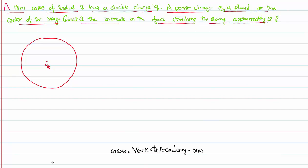First of all, at the center of the ring, there is a charge Q0. Throughout the ring, the total charge on the circle is Q. Between these two charges, there will be a repulsion. Because of the repulsion, the wire stretches its size. How much it stretches is the question.